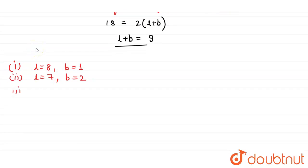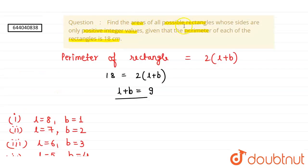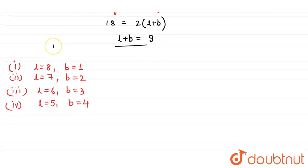Third case: length equals 6 and breadth equals 3. Fourth case: length equals 5 and breadth equals 4. So these are our cases. Now we also have to find the areas of these possible rectangles.